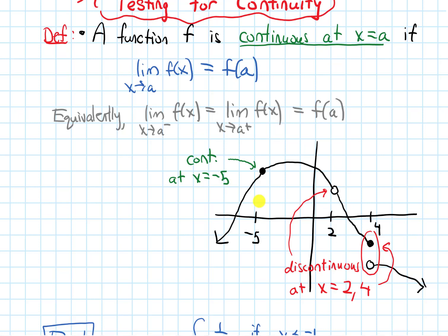This should match up with our conceptual understanding of what continuous means: I should be able to draw my function's graph through that point without lifting up my pencil. At negative 5, I would be able to draw it and go past it without lifting my pencil. At 2, I have to lift up my pencil because of the hole. And at 4, I have to jump down to the other piece — that's also discontinuous conceptually.